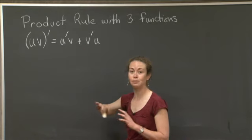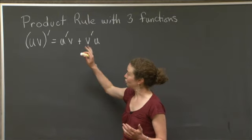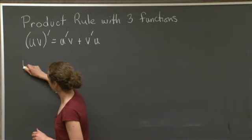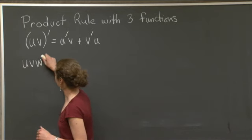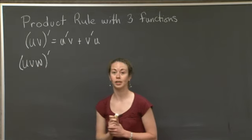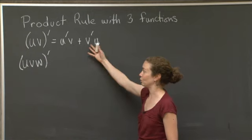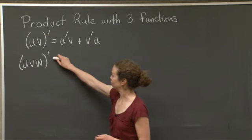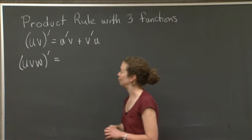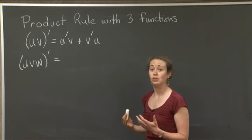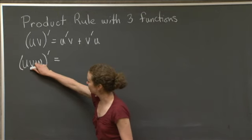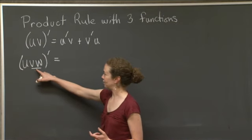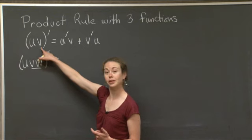And now what we want to do is expand that to the product of three functions, u times v times w. And we're going to explicitly use this rule. So uvw prime is what we want to look at. We're just going to take advantage of what we know to figure out what this expression will be, what this product of three functions when I take its derivative will be. So in order to do this easily, what we're going to do is treat v times w as a single function. So v times w will be our second function that essentially takes the place of the v up here.